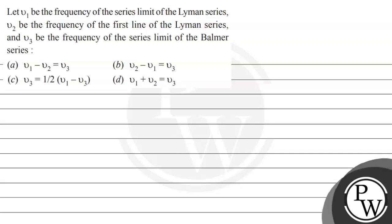Let's read this question. Let ν1 be the frequency of the series limit of the Lyman series, ν2 be the frequency of the first line of the Lyman series, and ν3 be the frequency of the series limit of the Balmer series. We are given options and need to find the relationship between ν1, ν2, and ν3.